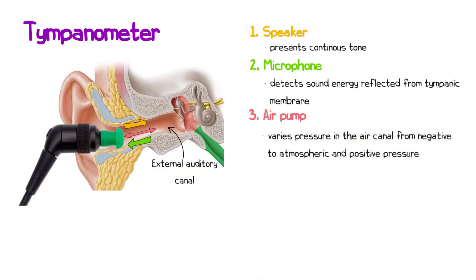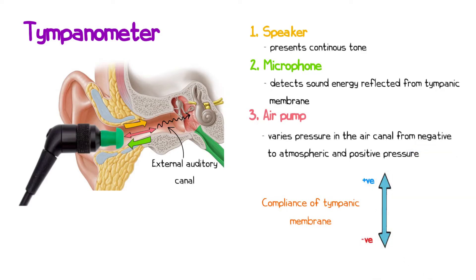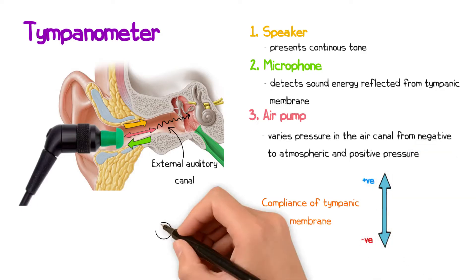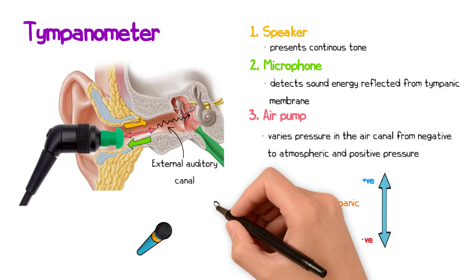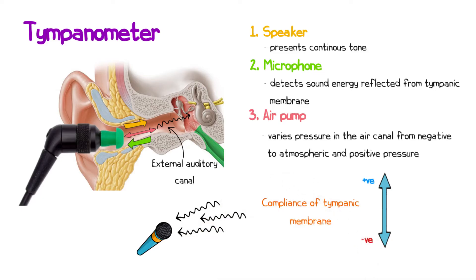As pressure in the ear canal is varied, the tympanic membrane is displaced, altering the amount of sound energy that enters the middle ear. The tympanometer measures the compliance of the tympanic membrane as the pressure sweeps from negative to positive values, using the amount of sound energy detected by its microphone to estimate the amount of sound energy admitted into the middle ear.